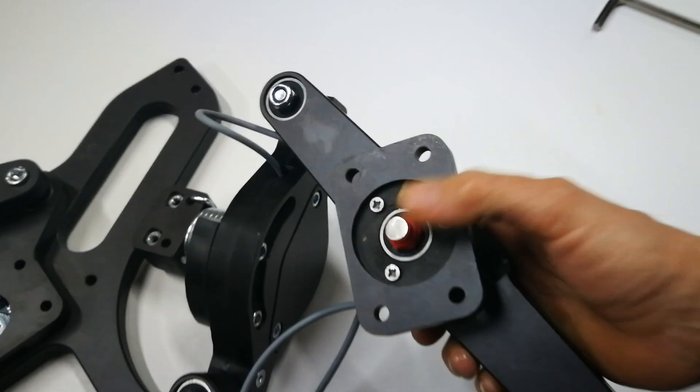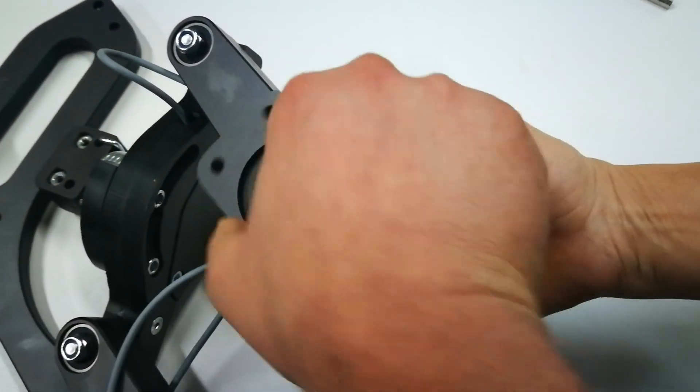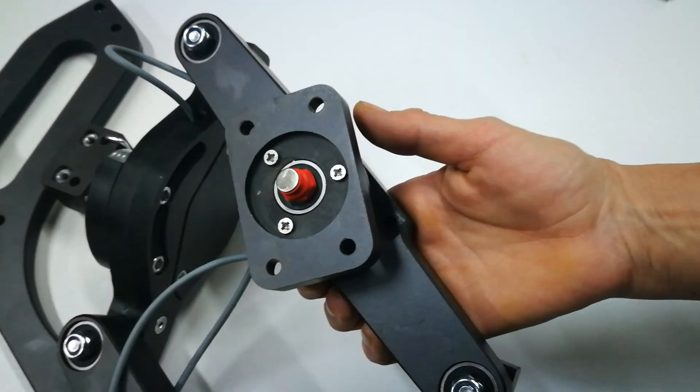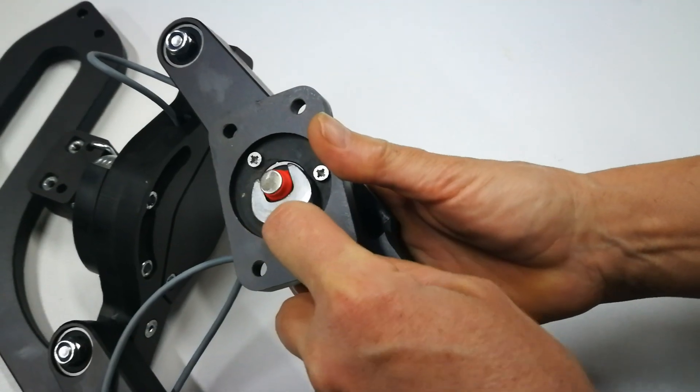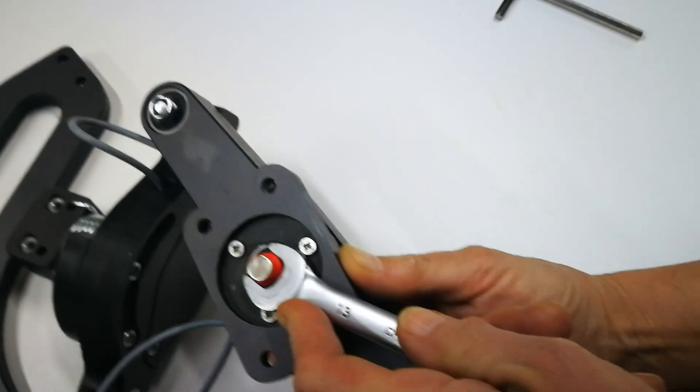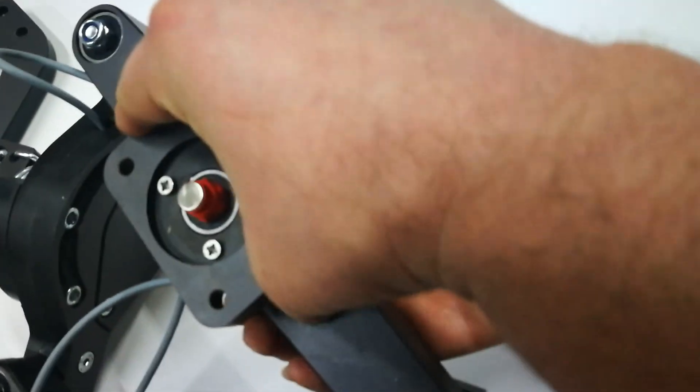You will know if you tighten it too much or not by spinning this piece on the bearing. If it spins hard you need to loosen it up a little, or tighten it more a little because you will feel the play when you jiggle this piece.